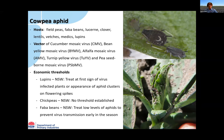After conducting monitoring, apply the threshold. In lupins in New South Wales, treat at first sign of virus-infected plants or if you spot aphid clusters on flowers and spikes. However, if you see virus symptoms, it may already be too late — so act when you spot aphids. For faba beans in New South Wales, treat at very low levels of aphids to prevent virus transmission. For chickpeas, there are no thresholds established at this stage.